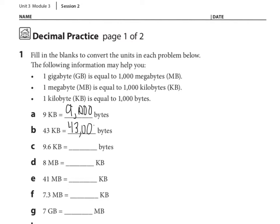C says, 9 and 6 tenths kilobytes is how many bytes? Well, if we know 9 kilobytes is 9,000, what would 6 tenths be? 600, that's right. So, 9 and 6 tenths kilobytes would be 9,600.